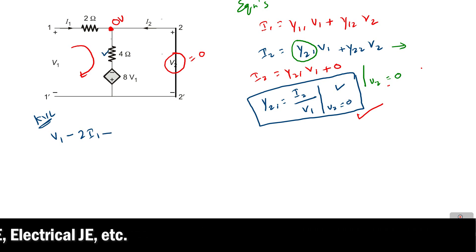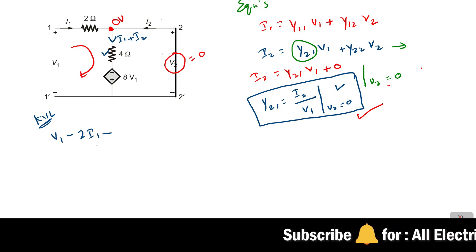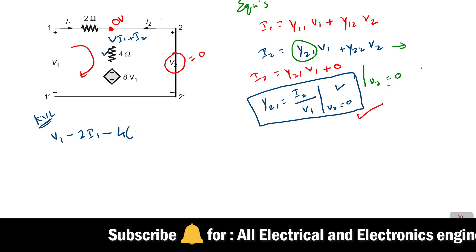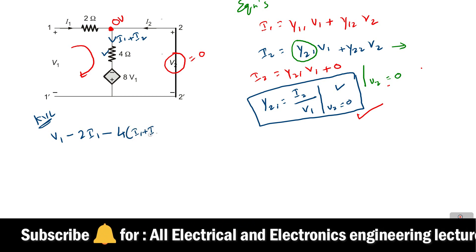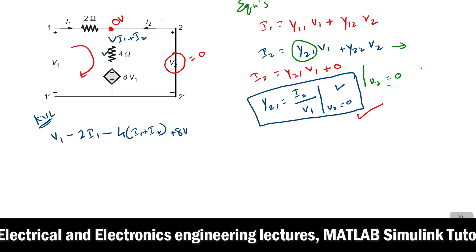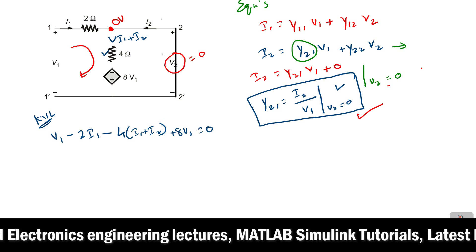Here we don't know the current, but here i1 and i2 both are incoming, so that's why you can say it is i1 plus i2. So now we can write the voltage across 4 ohm resistance as 4 into (i1 plus i2) plus 8v1 voltage-dependent voltage source, 8v1, that equals 0.